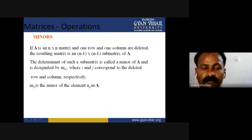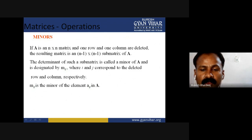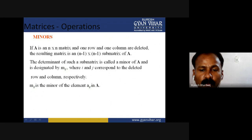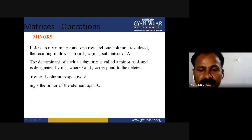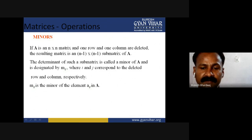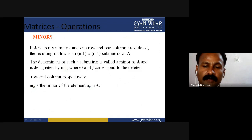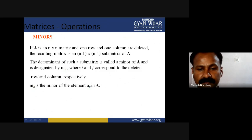Suppose we want to take the minor for an element at position A_21 — second row, first column. We delete the second row and first column, and the remaining elements give the sub matrix. Now we need to give an algebraic sign — positive or negative. For A_21, two plus one equals three, which is an odd number. So if the position sum is odd, we put a negative sign in front. In this way, we calculate minors and cofactors.